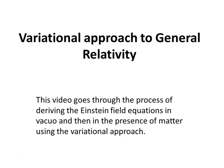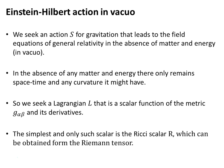This video looks at the variational approach to general relativity. We will derive the Einstein field equations using a variational approach, both with and without matter. We need an action S for gravitation that leads to the field equations, and we'll do that first in the absence of any matter and energy.